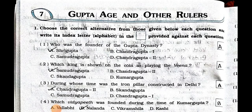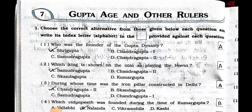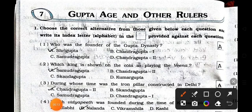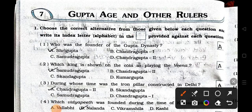Students, how are you all? I hope you all are fine. Today we'll see Standard 6, subject Social Science. Chapter number seven, chapter name is Gupta Age and Other Rulers. In that, question number one: choose the correct alternative from those given below each question and write its index letter alphabet in the box provided against each question.